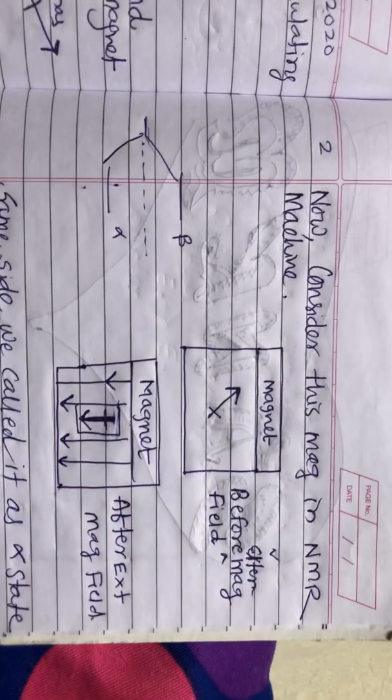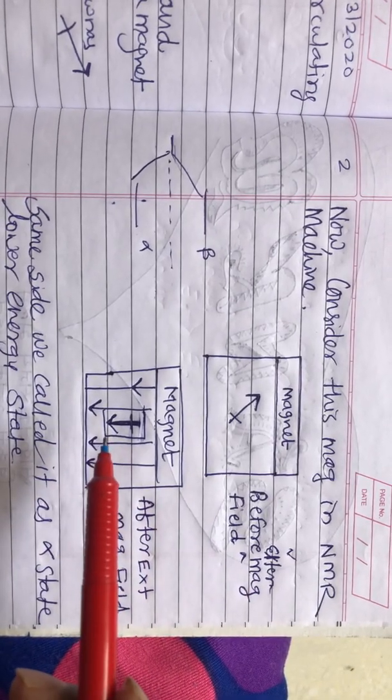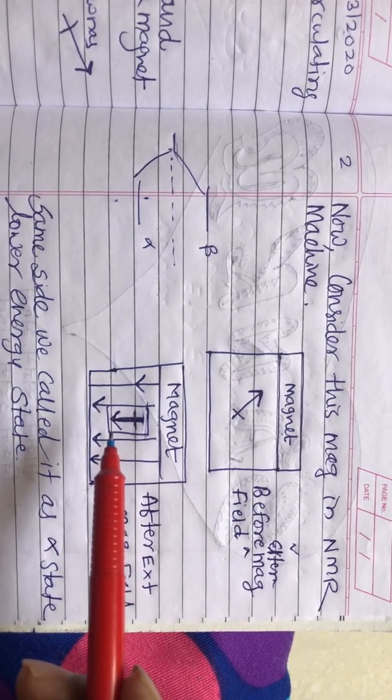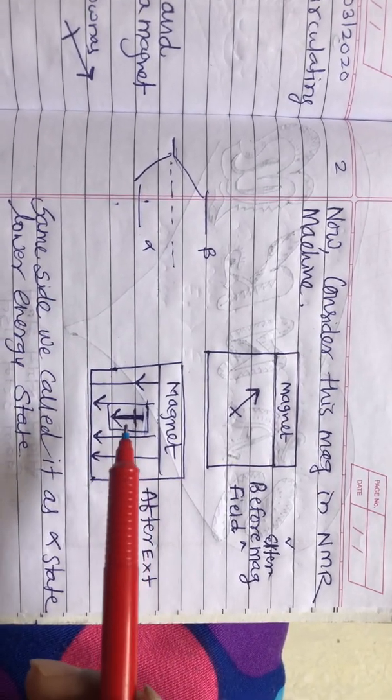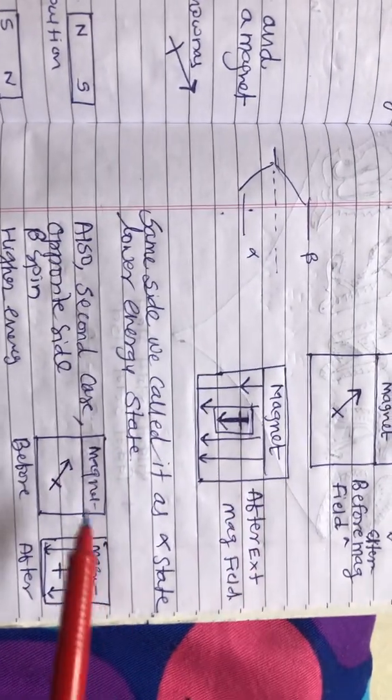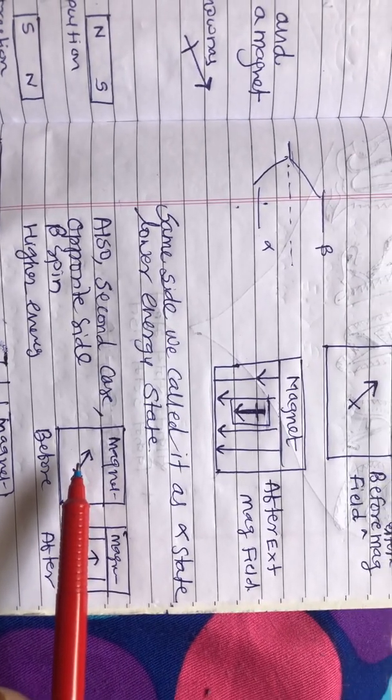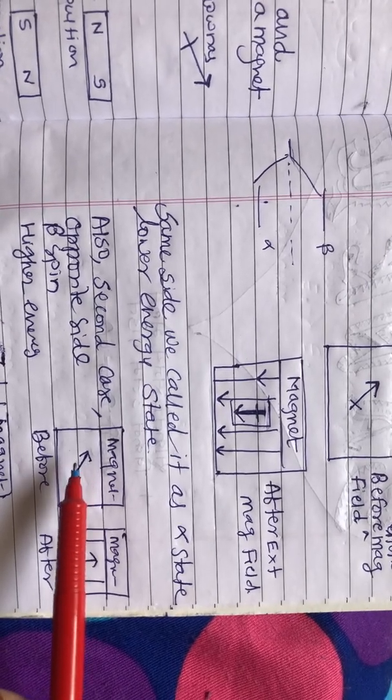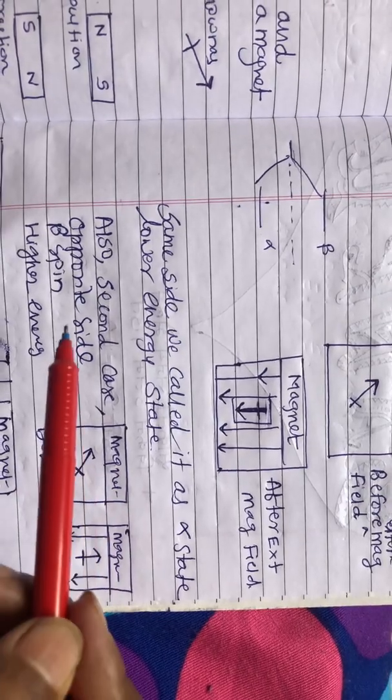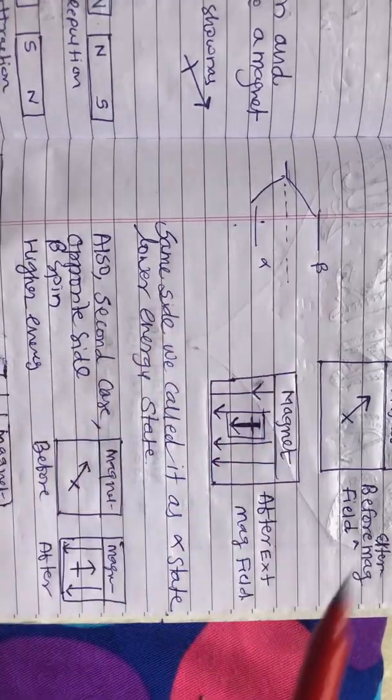When such phenomenon is happening, they are in the alpha state. This is called alpha state with lower energy, on the same side. But when there is an external magnetic field, it is possible that it will not go along that external magnetic field or it can oppose. That time we call it as a beta spin state with high energy. These two energies we can show like this.